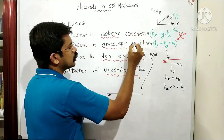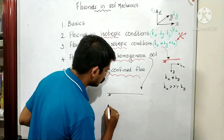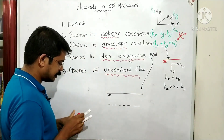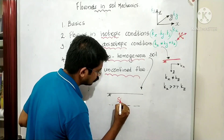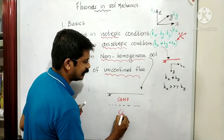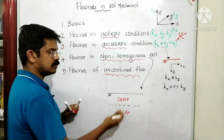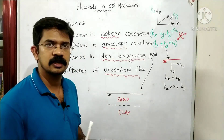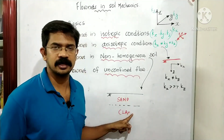The next condition is flow in non-homogeneous soil. For the homogeneous conditions we discussed earlier, this is the non-homogeneous condition. The first layer is sand and the second layer is clay — that is a non-homogeneous condition where water flows from one soil to another.